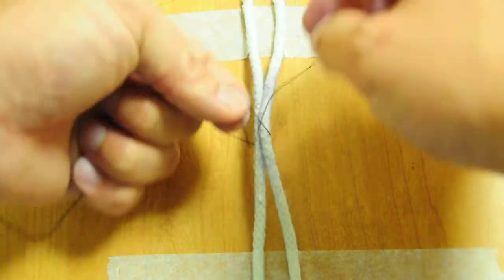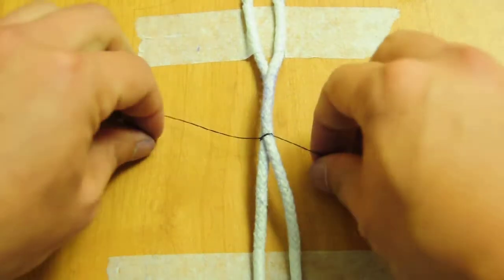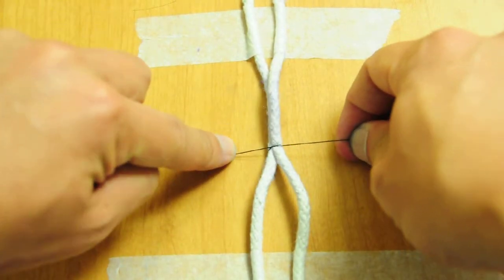I'm going to do it twice because you're going to do a surgeon's knot, so it cinches down. See it cinches down, holds, and then you're going to do your thumb.